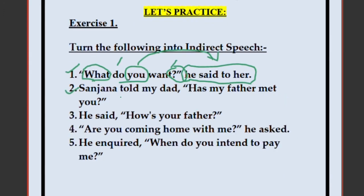Second: Sanjana told my dad, 'Has my father met you?' Change 'told' to 'asked': Sanjana asked my dad. This is not a WH question, so use 'if': Sanjana asked my dad if — 'my father' is Sanjana's father, so 'her father.' 'Has met' is present perfect, changing to past perfect: had met. 'You' refers to 'my dad,' so 'him.' Answer: Sanjana asked my dad if her father had met him.